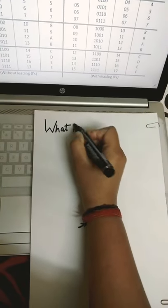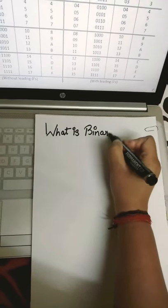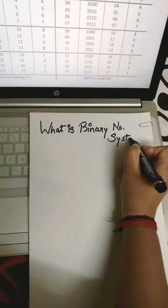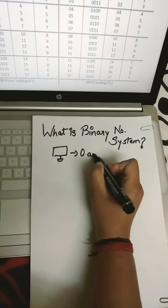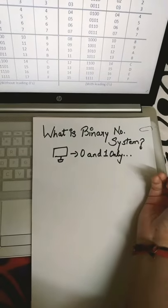So today I'm going to tell you what is binary number system in just 15 seconds. In the computer system, there are only two digits that are 0 and 1 only.